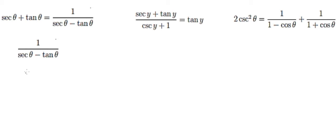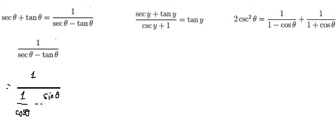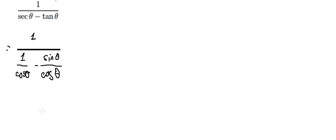We know that secant of theta can be changed into one over cosine theta. And for tan theta, we will change it to sine theta over cosine theta. We can see that we have cosine theta appearing multiple times, so we can do factorization.